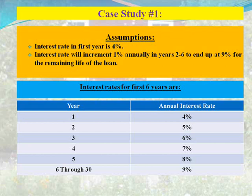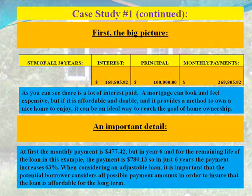Case study number one. Assumptions: the interest rate in the first year is 4%. The interest rate will increment 1% annually in years 2 through 6, to end up at 9% for the remaining life of the loan. Below you can see the interest rates for the first 6 years, ending with years 6 through 30 where the annual interest rate is set at 9%.